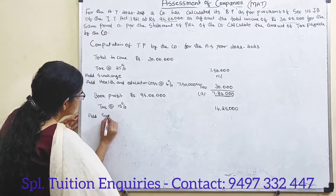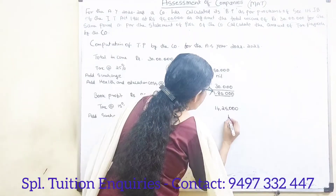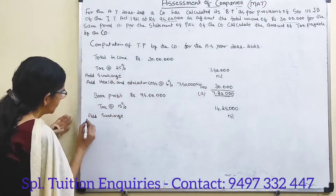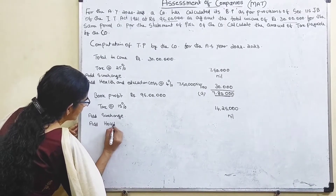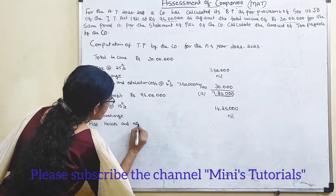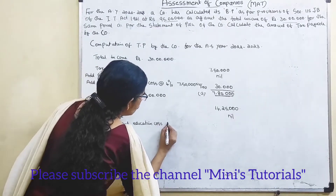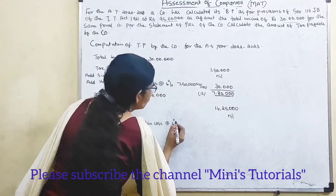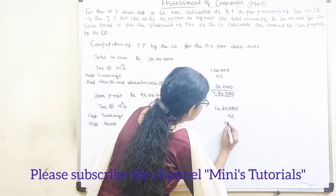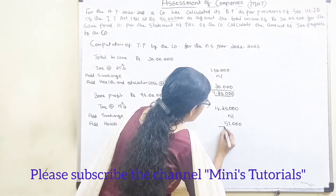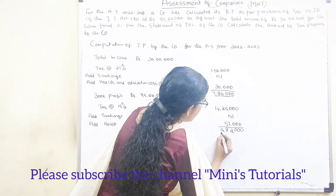Add surcharge: Nil. Add health and education cess at the rate of 4% on Rs. 14 lakhs 25 thousand, which equals Rs. 57 thousand. Total MAT payable is Rs. 14 lakhs 82 thousand.